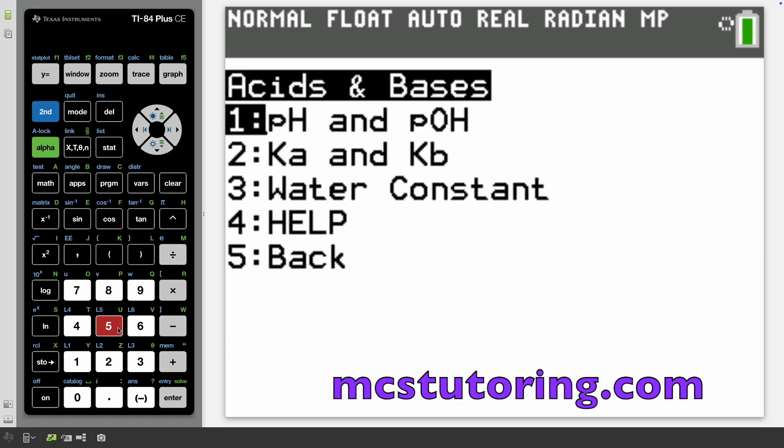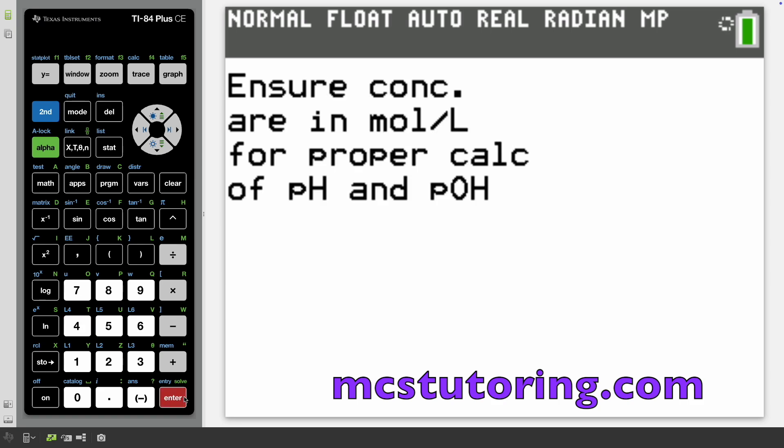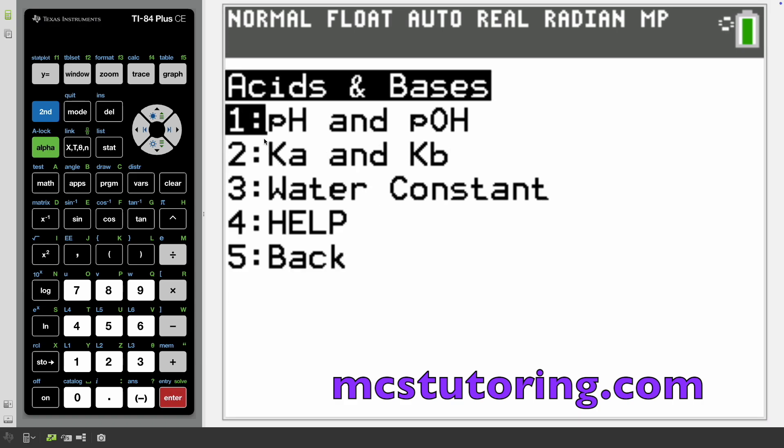Let's talk about acids and bases. You got pH, POH, K sub A, K sub B, water constant, and a help menu. pH is negative log H positive or hydronium ion. POH is negative log OH negative, which is hydroxide ion. pH plus POH is 14. Ensure concentrations are in moles per liter for proper calculations of pH and POH.